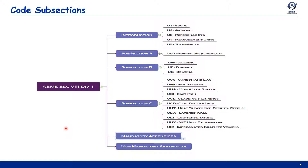The code subsections begin with an introduction containing the U section from U-1 to U-5. The code is further subdivided into three subsections: A, B, and C. Subsection A contains general requirements (UG) common for all pressure vessels. Subsection B contains requirements related to method of fabrication — UW for welding, UF for forging, and UB for brazing.